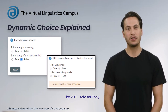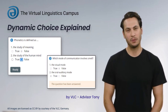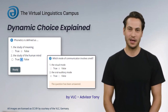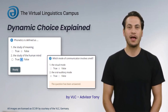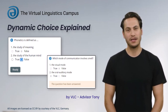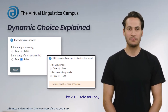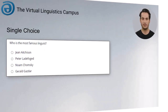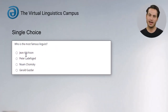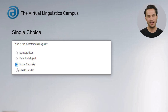Welcome! In this short video I will explain the Dynamic Choice, a unique test format on the VLC. It is based on the single-choice task, where usually one question is asked and the correct answer has to be chosen from several options.